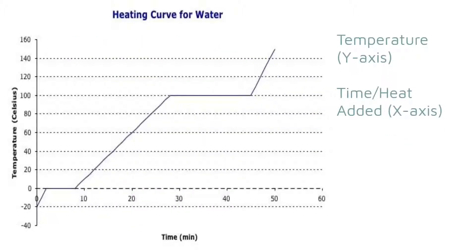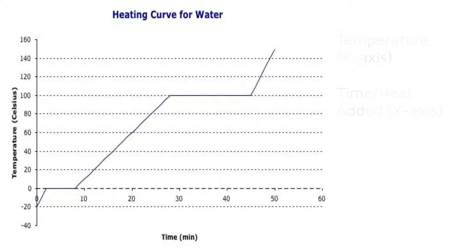When you're graphing a heating curve, temperature is going to be put on the y-axis, and time, or heat added, will be put on the x-axis. As time goes on, or as heat is consistently added, the temperature will increase and the substance will go through phase changes.